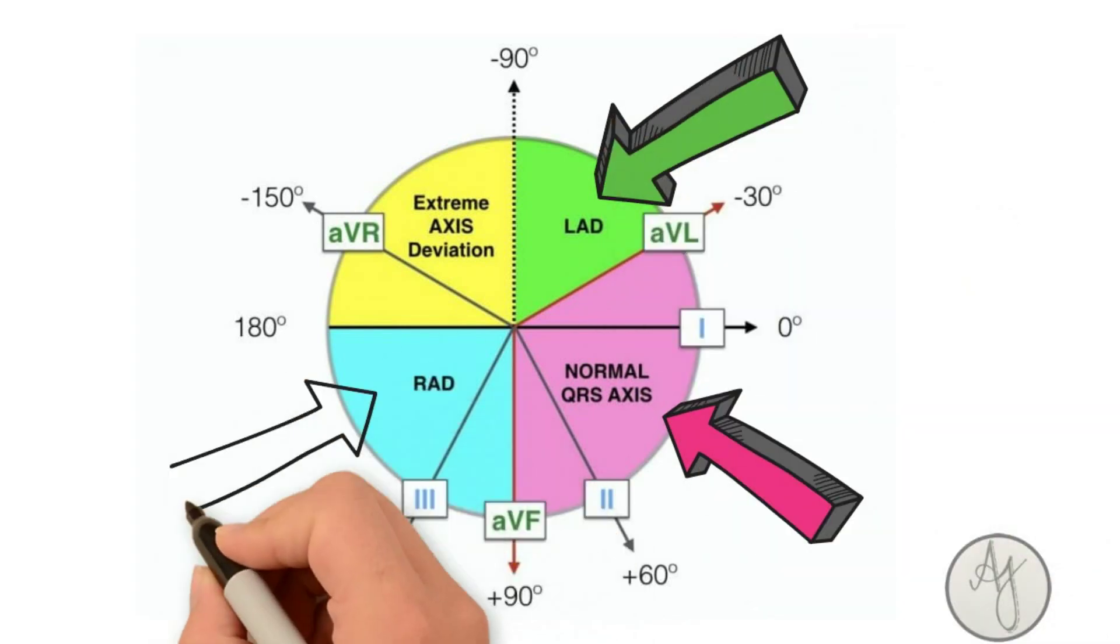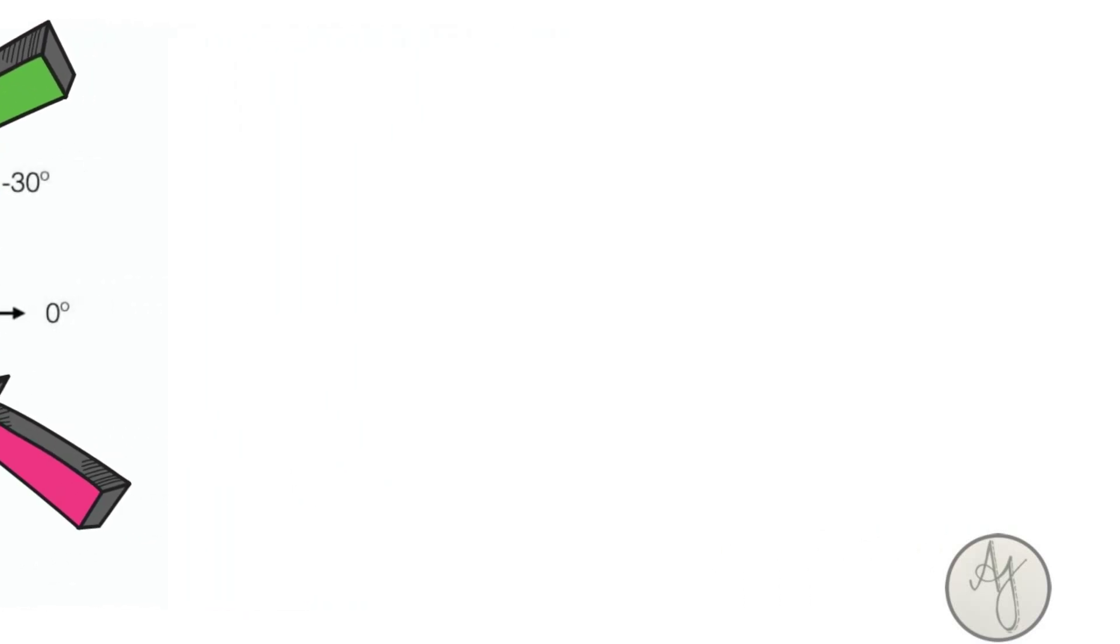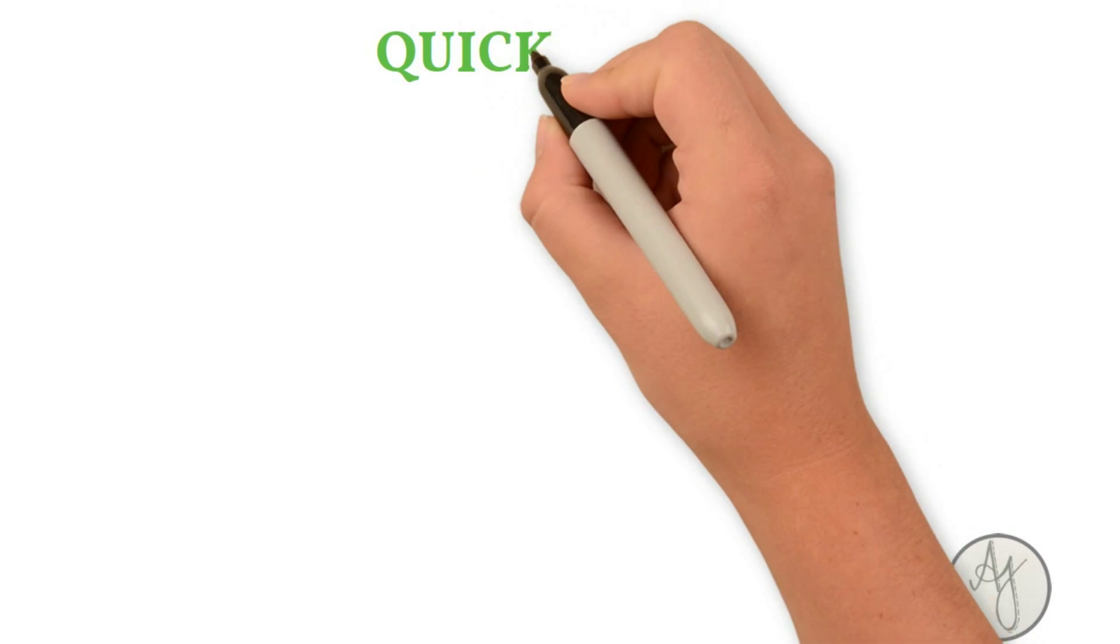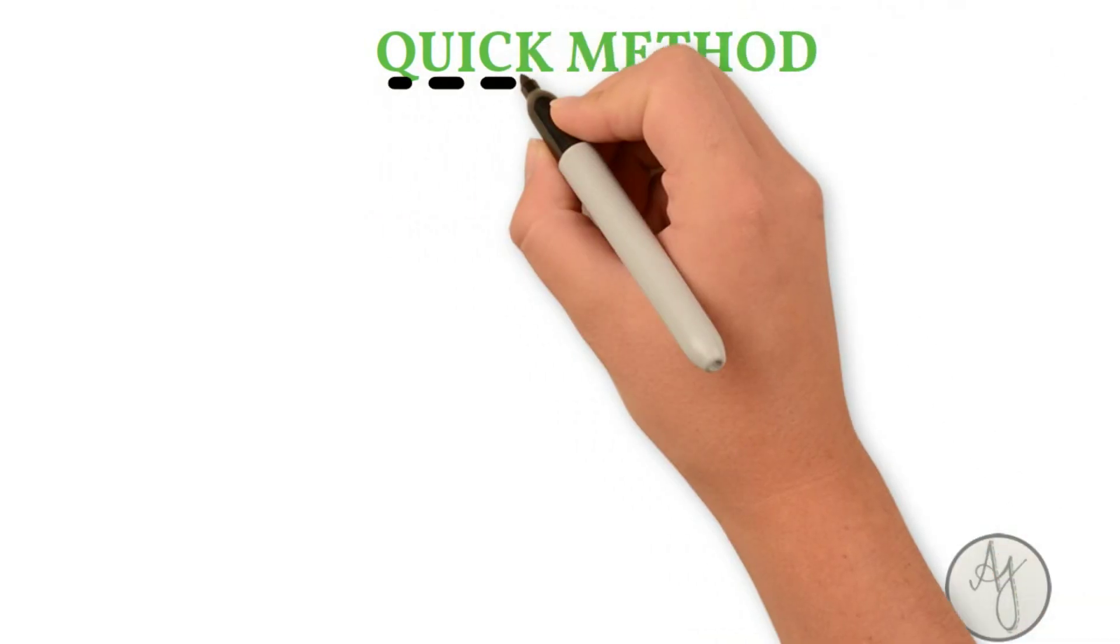So let's have a look at a shortcut to figure out the axis. This is also called the quick method. All you need to do is look at leads one and two.